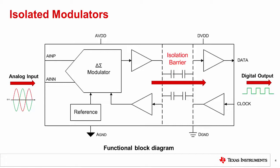The isolated data output produces a stream of digital ones and zeros at the same frequency as the clock source. When these ones and zeros are averaged over time, the serial bitstream is proportional to the analog input voltage.